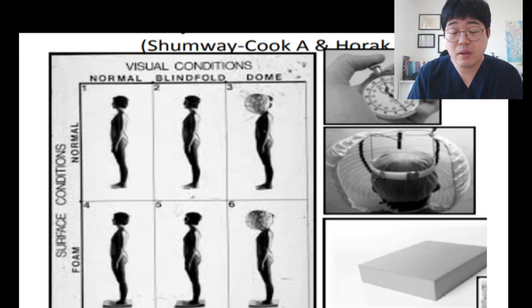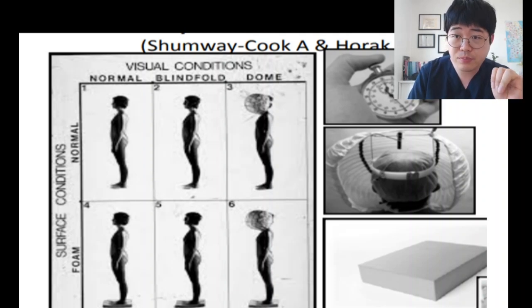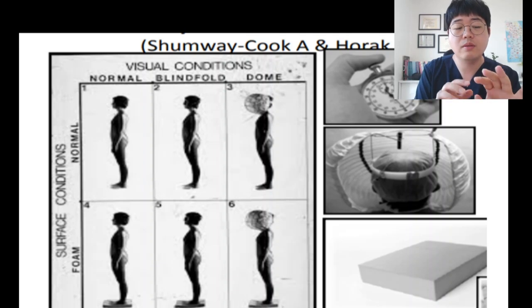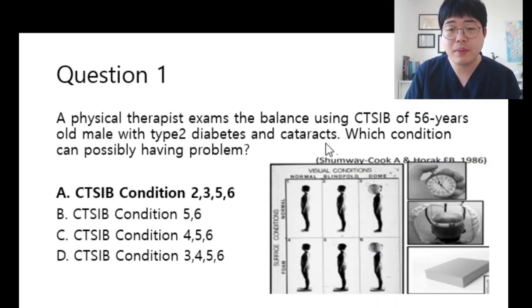That is all the important information about CTSIB. So vision problems, somatosensory problems, vestibular problems, and sensory selection problems - you should distinguish these four different problems. So the answer is A. Type 2 diabetes and cataracts have vision problems. Patients may have blurred vision. So the answer is A. Thank you for watching this video today.